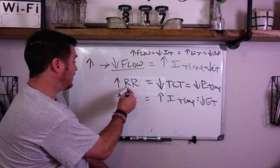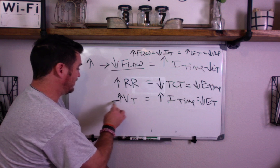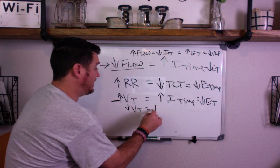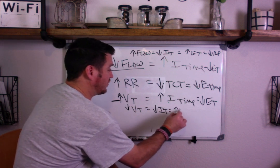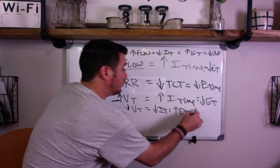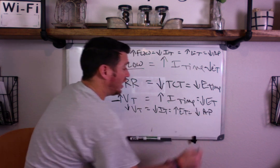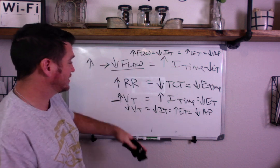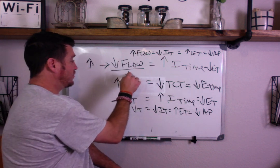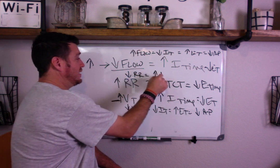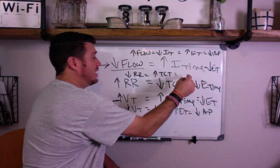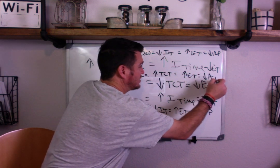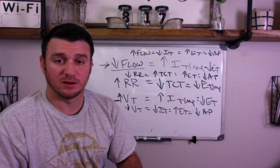If we have an increase in tidal volume, we can decrease the tidal volume, which decreases I-time, increases E-time, and decreases the chance for auto-PEEP. And finally, if we decrease our respiratory rate, we increase total cycle time, which increases E-time, which decreases risk for auto-PEEP. Those are the three main ventilator changes we can make.